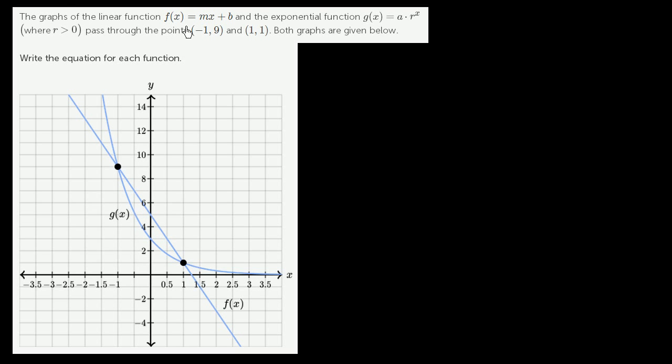The graphs of the linear function f(x) = mx + b and the exponential function g(x) = a·r^x, where r is greater than 0, pass through the points (-1, 9) and (1, 1). Both graphs are given below. This very clearly is the linear function, it is a line right over here, and this right over here is the exponential function.